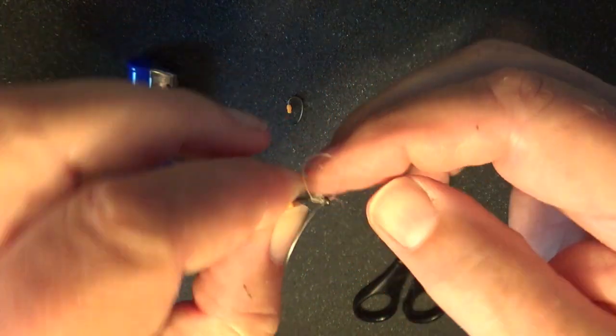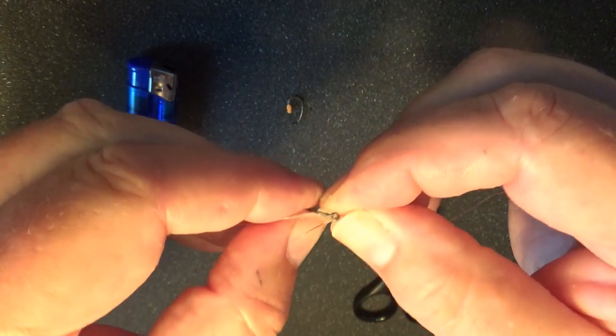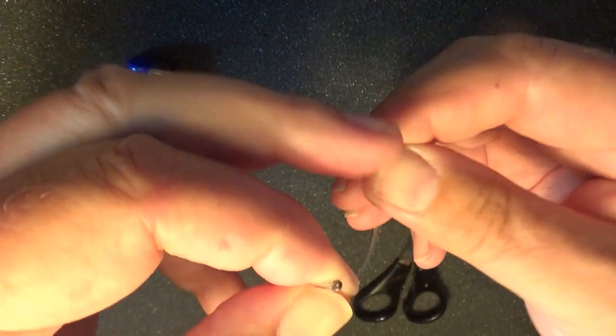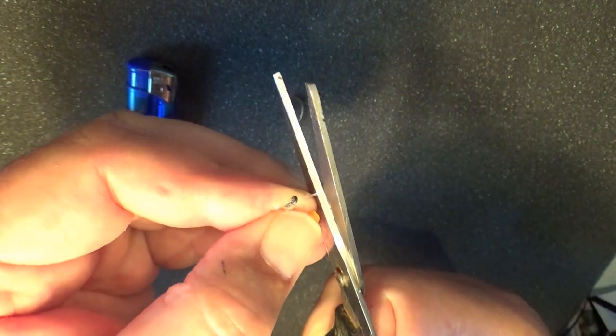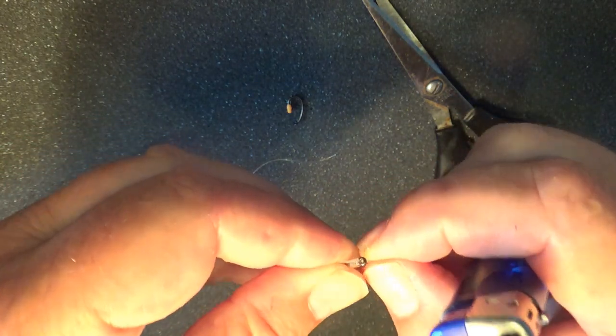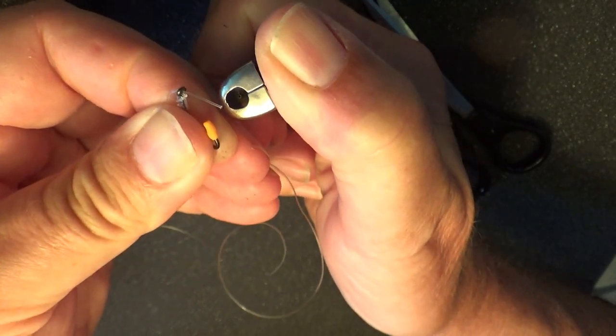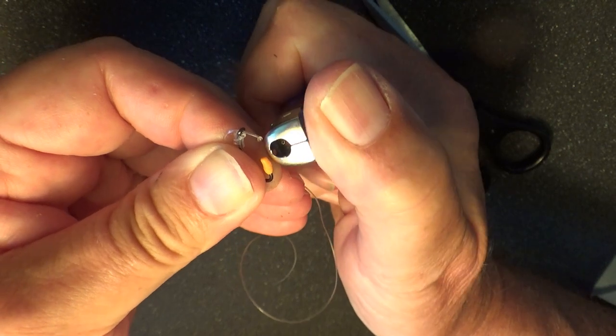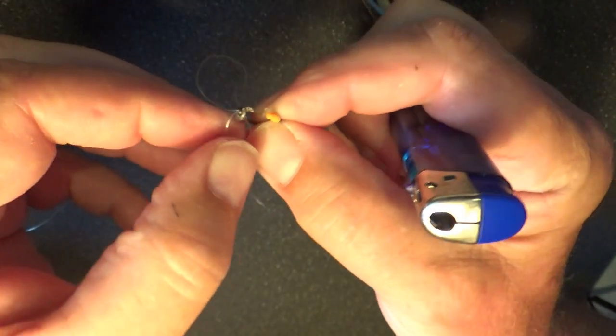Form a D. Adjust the D. Trim the tail. Blob it with a lighter flame, flattening the line with the metal of the lighter. Stops it coming through.